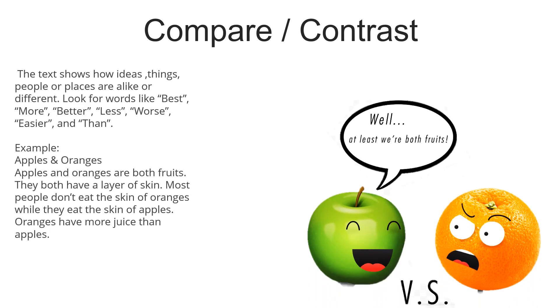Let's read the following example on comparing and contrasting apples and oranges. Apples and oranges are both foods. They both have a layer of skin. Most people don't eat the skin of oranges while they eat the skin of apples. Oranges have more juice than apples.